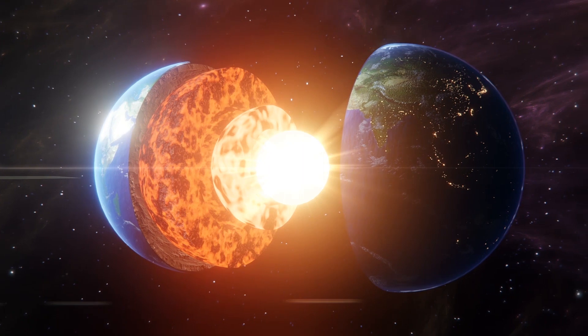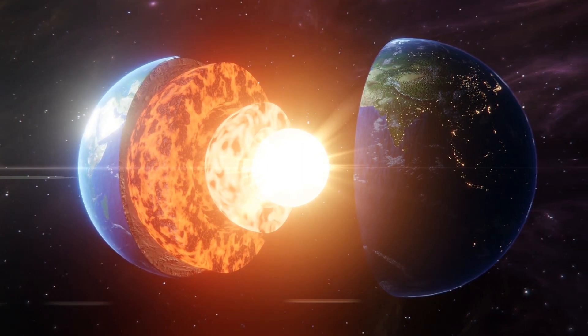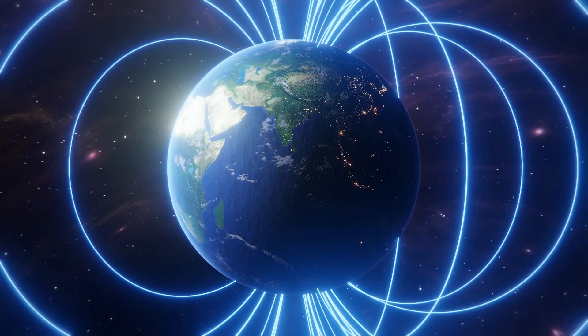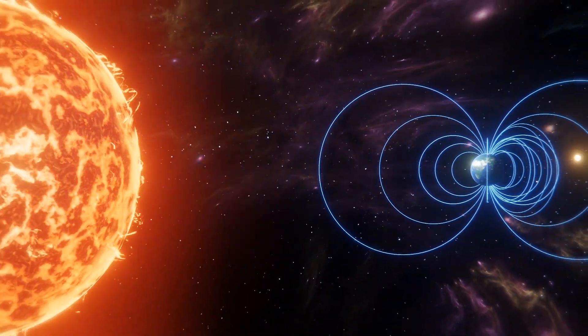The Earth's magnetic field, which is generated by the dynamo-action of its molten metal core, protects the planet from the full impact of solar and cosmic radiation.